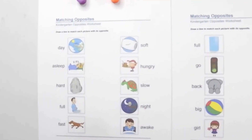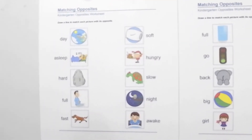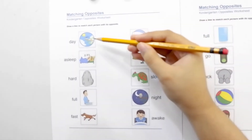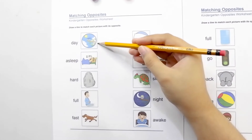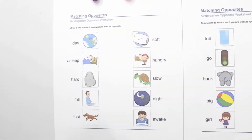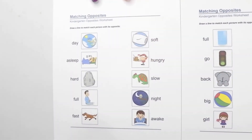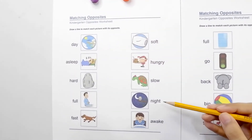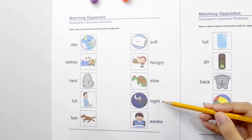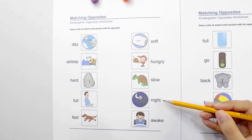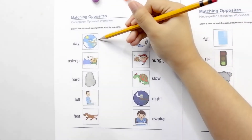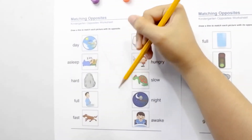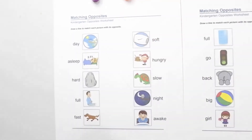Let's do an activity here. The first picture is day. Day directly contrasts with night. So let's match that. Day and night — they are opposites.